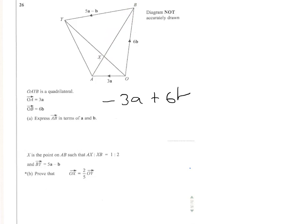So I've been told that BY, so B to Y, can be expressed by the vectors 5a minus b. And I've got to prove then that OX equals two-fifths of OY.